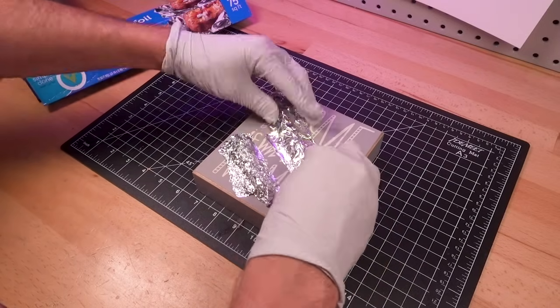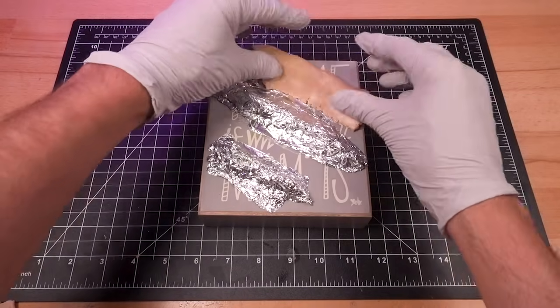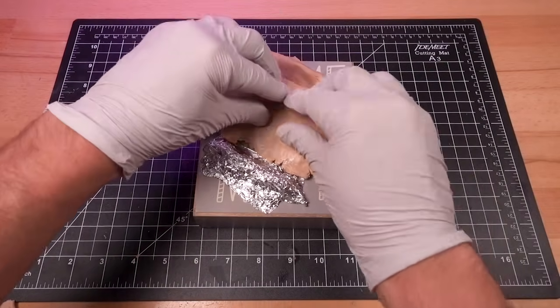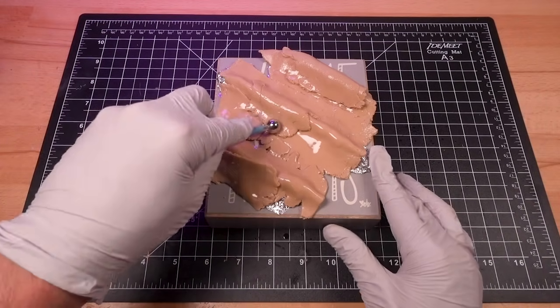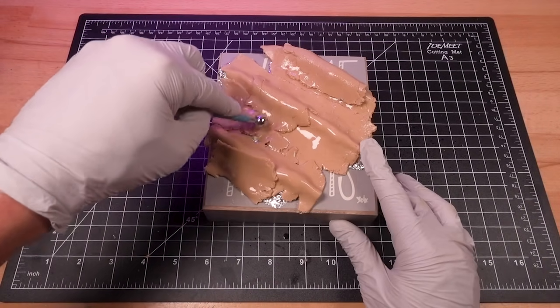After hot gluing aluminum foil down, I coated them in sheets of polymer clay to sculpt the waves. A spritz of isopropyl alcohol helped to soften the clay, and these ball styluses made for easy texturing.